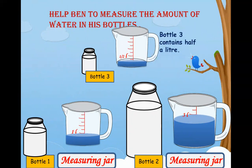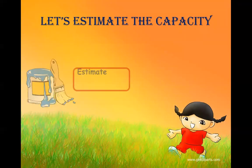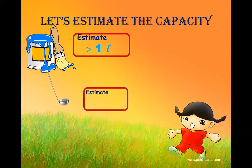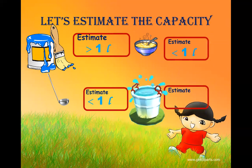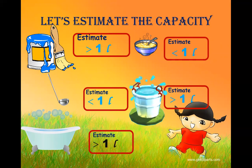So bottle three contains half a liter. Now let's estimate the capacity of some containers. The paint bottle — it is more than one liter. The spoon — yes, less than one liter. The bowl — less than one liter. This container is more than one liter, and the bucket is more than one liter.